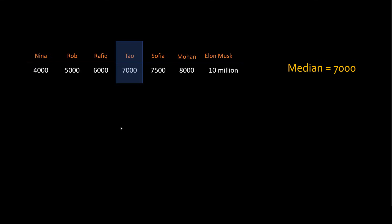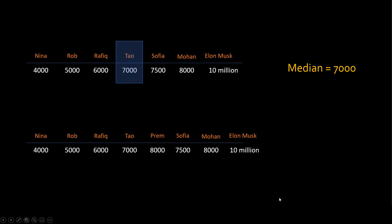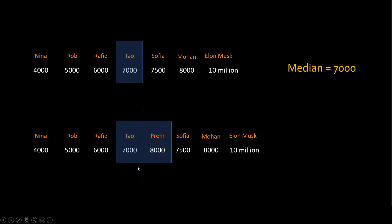What if my dataset has an even number of data points? Here I have 7 total, so this was an easy thing — it was the middle number. But what if I have an even number of data points? The problem is easy to solve: you draw a line in the middle, take both the numbers and take an average. So in this case, the median is 7,500. Overall, if your number of data points are even, then you take the two middle values and average them — that's your median. If your data points are odd, then you take the middle value and that's your median.